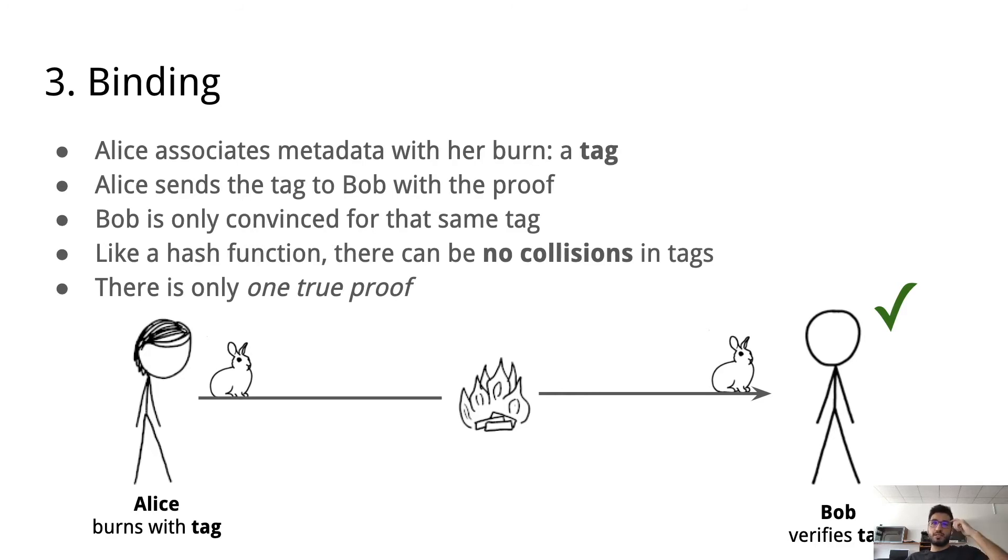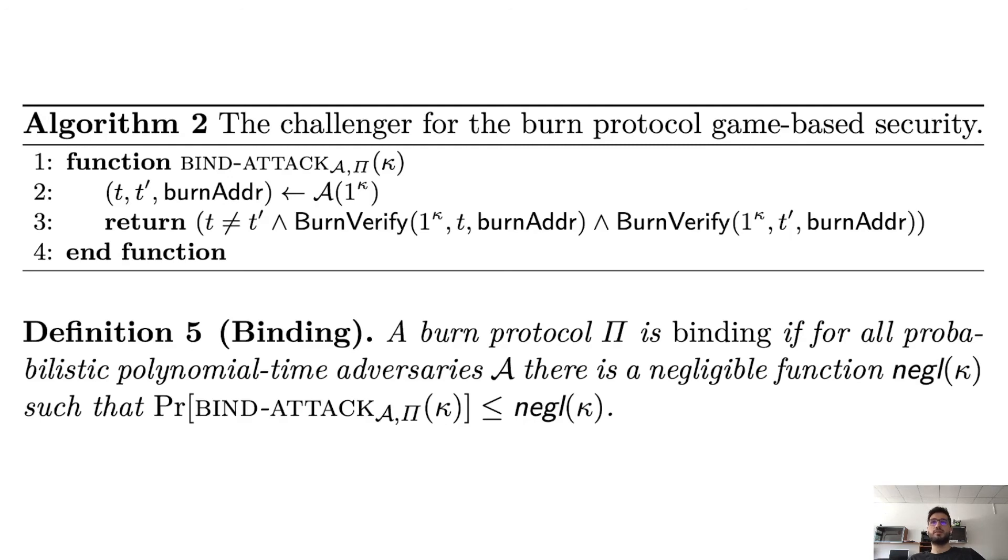Then binding says basically that there's only a single tag that can be associated with a burn. This is like collision resistance of burn address generation. It could be matched only to a single tag. The game more formally is BindAttack basically requests from the adversary that they return two tags and a burn address such that these tags are not the same, but they verify with the same address. Then of course, the protocol is binding if this can only happen with negligible probability for all polynomial time adversaries.